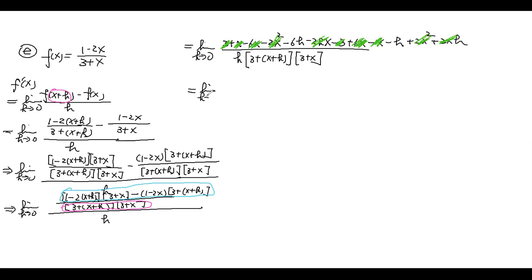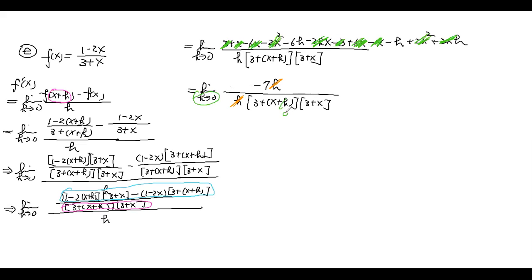So we have limit as h → 0 of −7h / [h · (3+x+h)(3+x)]. H and h cancel. As h → 0, we get −7 / (3+x)². So f′(x) = −7 / (3+x)².